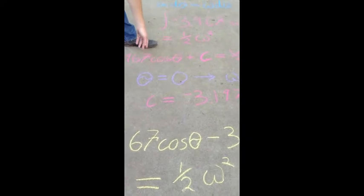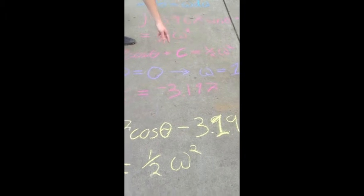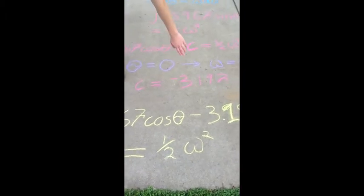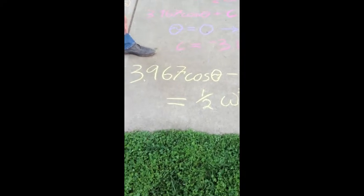To find that constant, theta equals zero when omega equals one. Plugging those in, we find C equals negative 3.197.